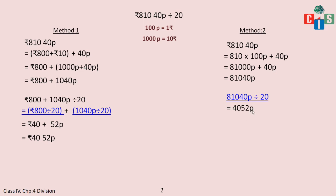Now I have paisa only, so I have to convert this paisa into rupees and paisa — back to the original form. I will split 4052 into 4000 paisa and 52 paisa. 4000 paisa will be 40 rupees, and 52 paisa cannot be converted into rupees because you need 100 paisa to make 1 rupee. So my answer will be 40 rupees and 52 paisa.